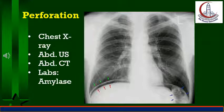Fever and toxemia may be present if neglected. The aforementioned picture, together with air under the diaphragm on plain X-ray of the chest or abdomen, is diagnostic and no further investigations are needed. Perforations of a few hours may not show pneumoperitoneum on X-ray, and X-ray needs to be repeated after six hours. In this case, other differential diagnoses are to be considered, especially acute pancreatitis, dissecting aortic aneurysm, and acute cholecystitis.